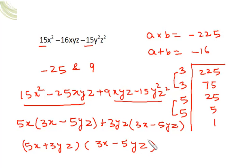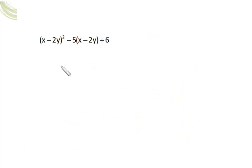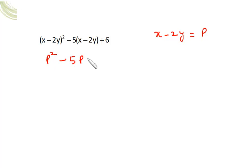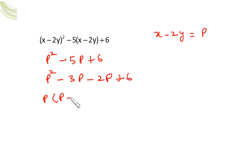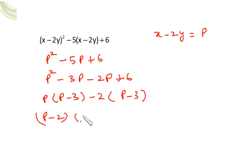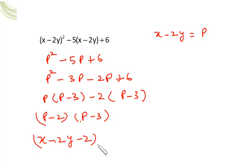For (x-2y)²-5(x-2y)+6: let p = x-2y, so it becomes p²-5p+6. We need sum=-5 and product=+6, so split as -3 and -2. Rewrite as p²-3p-2p+6, giving p(p-3)-2(p-3) = (p-2)(p-3). Substituting back: (x-2y-2)(x-2y-3).